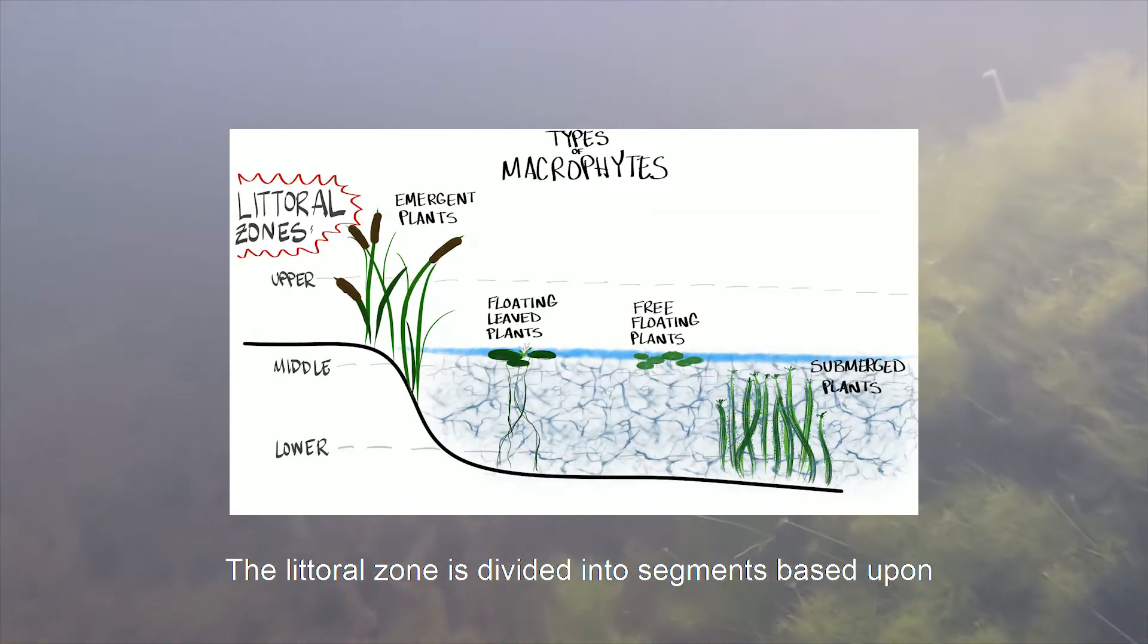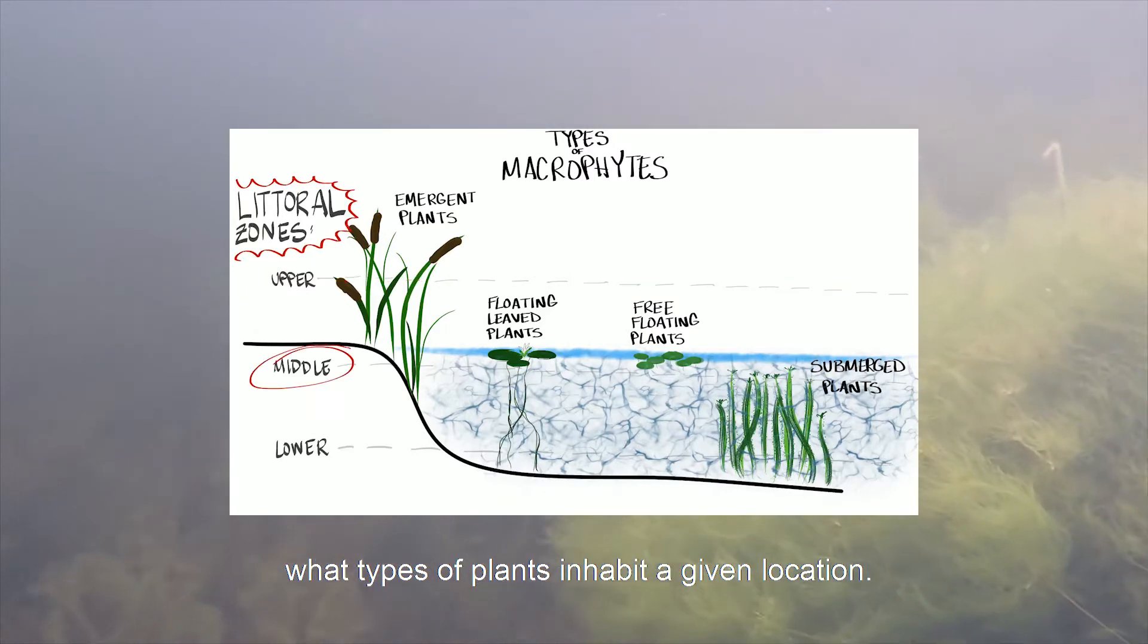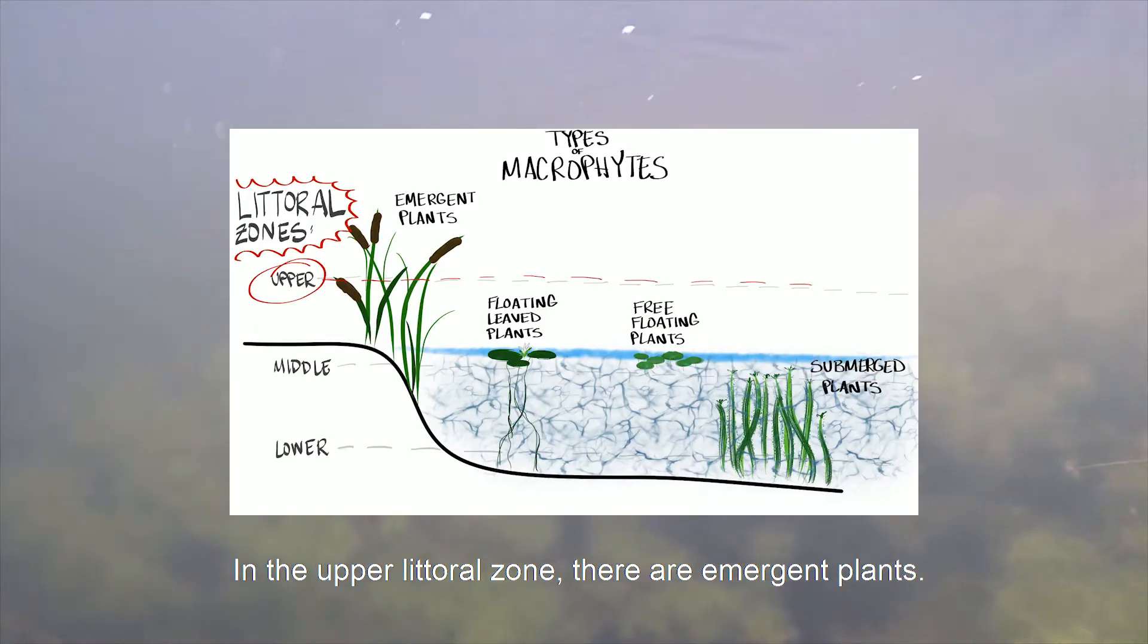The littoral zone is divided into segments based upon what types of plants inhabit a given location. In the upper littoral zone there are emergent plants.